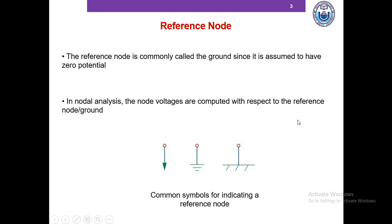We need to select one of the nodes as a reference node — that's the first thing to remember. The second thing is that the voltage of the reference node is zero volts. And the third point is that all the nodal voltages we are trying to compute are with respect to the reference node.